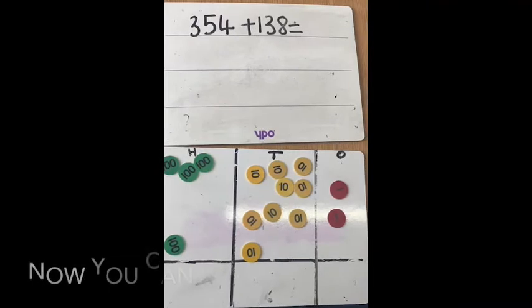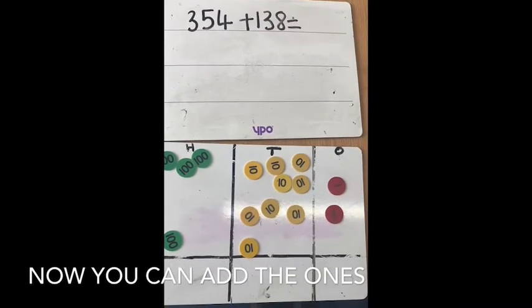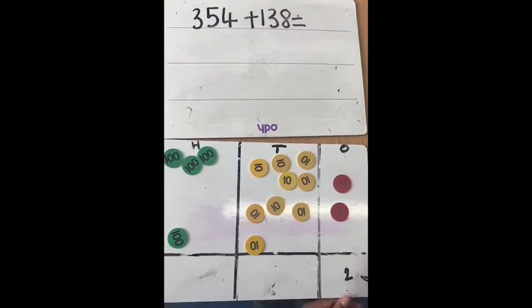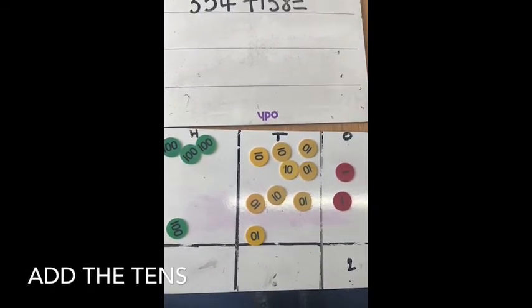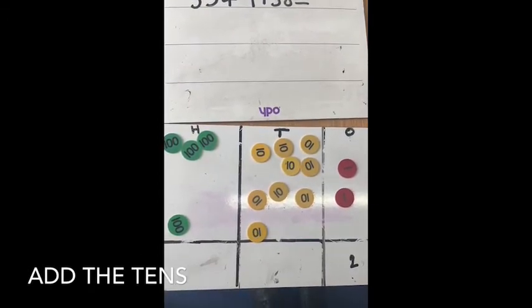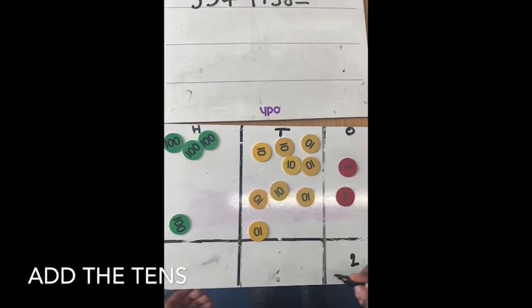I can now add the ones: 1 plus 1 equals 2. Now add the tens: 50 plus 30 and add the carry 10 equals 90.